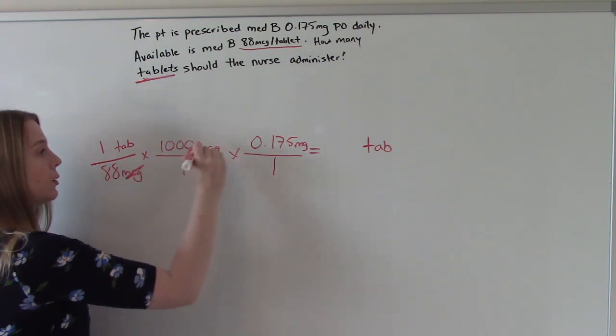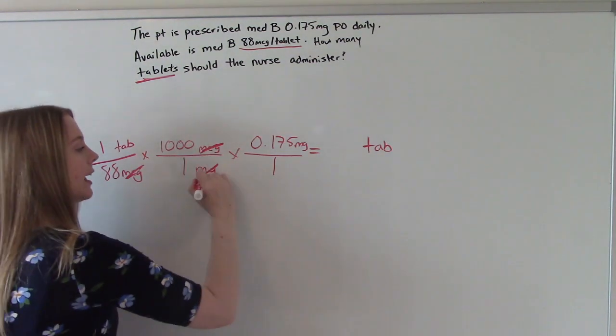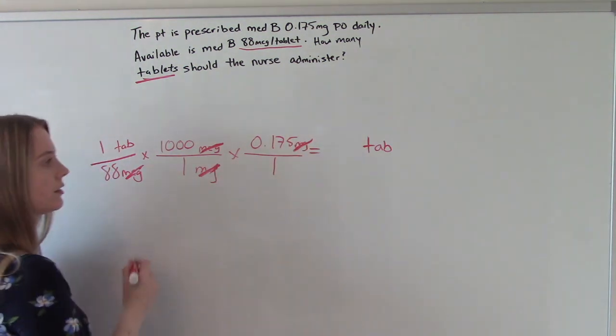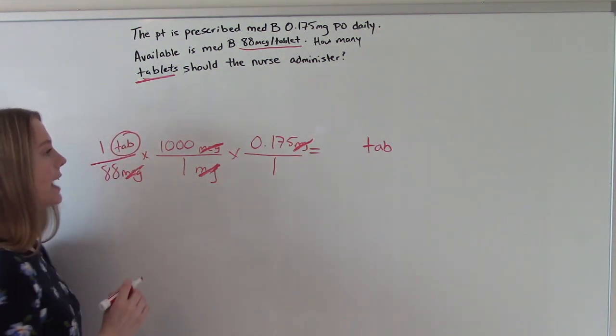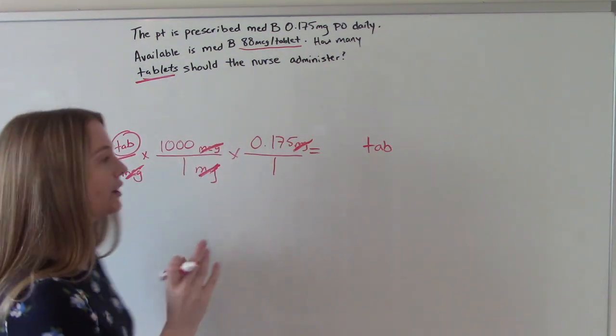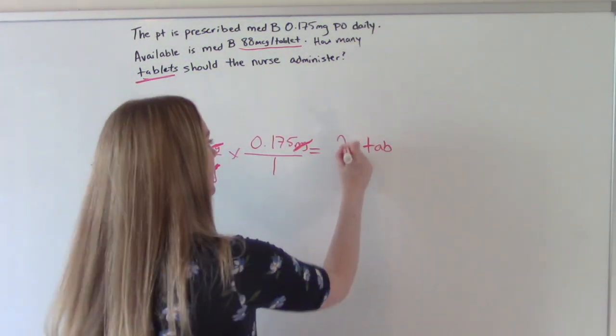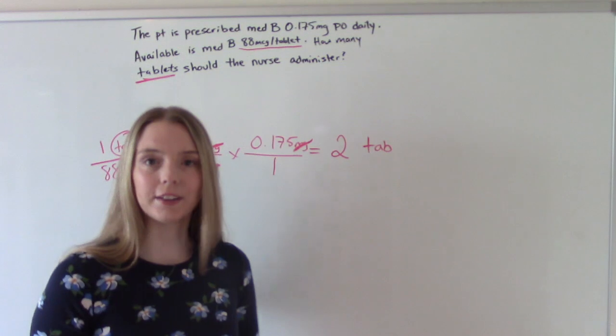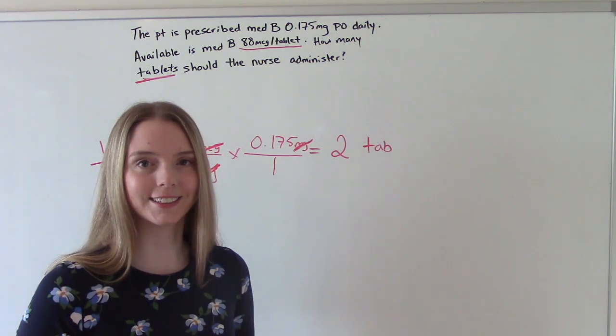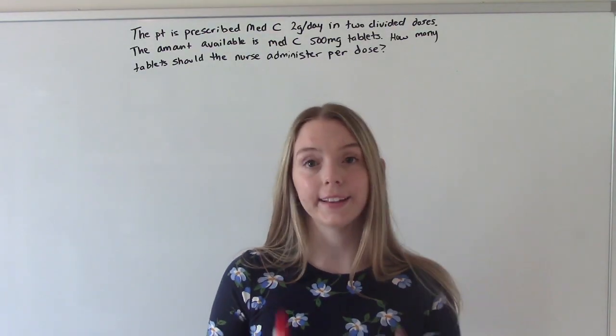Then we'll cancel micrograms, cancel out milligrams, and then the only thing left is tablets. And then you punch it into your calculator, you do the math, and you get 2. So we're going to be giving 2 tablets to this patient. Let's do one more in this format.